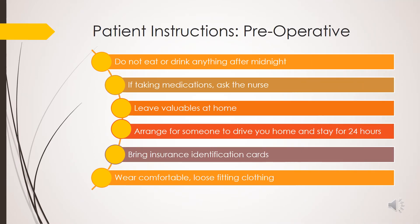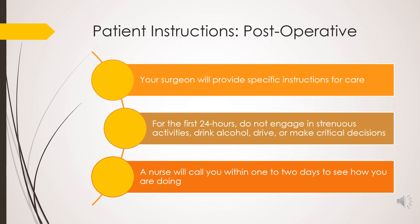The last type of patient education we will focus on revolves around giving patient instructions. As a medical administrative professional, you may be in charge of scheduling and coordinating tests and procedures for patients. Some examples of preoperative instructions for procedures requiring general anesthetic include: do not eat or drink anything after midnight; ask the nurse whether to continue or discontinue medications beforehand; leave all valuables at home; arrange for someone to drive you home and stay with you for 24 hours; bring insurance identification cards; and wear comfortable, loose-fitting clothing.